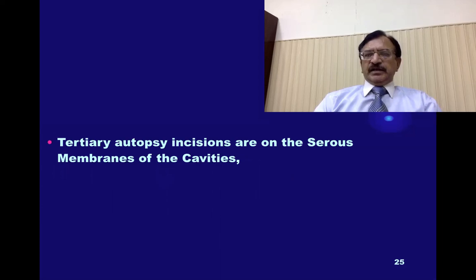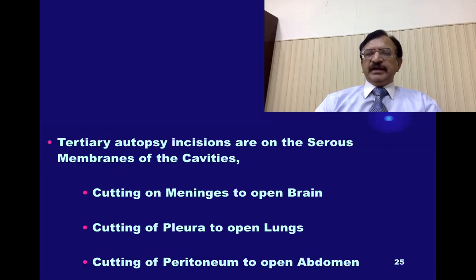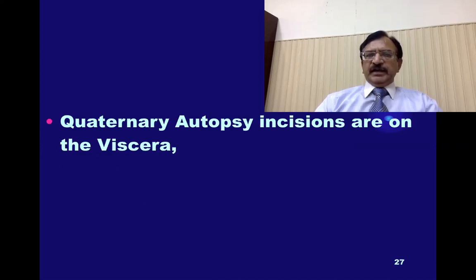Then the tertiary autopsy incisions are on the serous membranes of the cavities — like cutting the membranes to open the brain, cutting the pleura to open the lungs, and cutting the peritoneum to open the abdomen. These tertiary incisions cut through the membranes to enter the cavities. Then quaternary incisions — at the fourth level — are performed on the viscera.